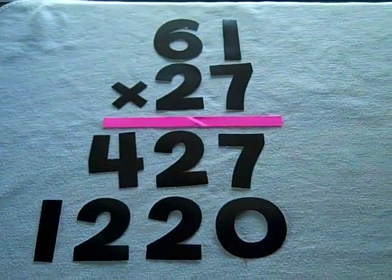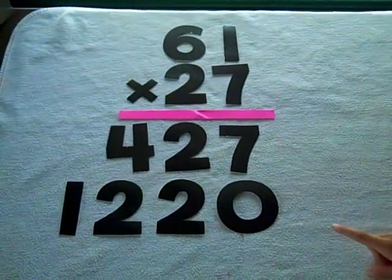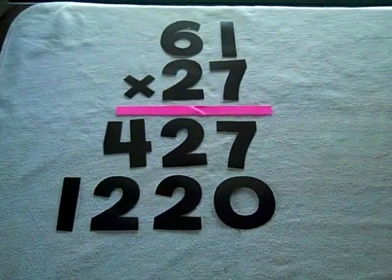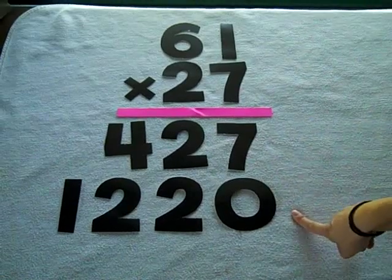Now that the multiplication is done, step 3 is to add, like a regular addition problem, your two place value answers.